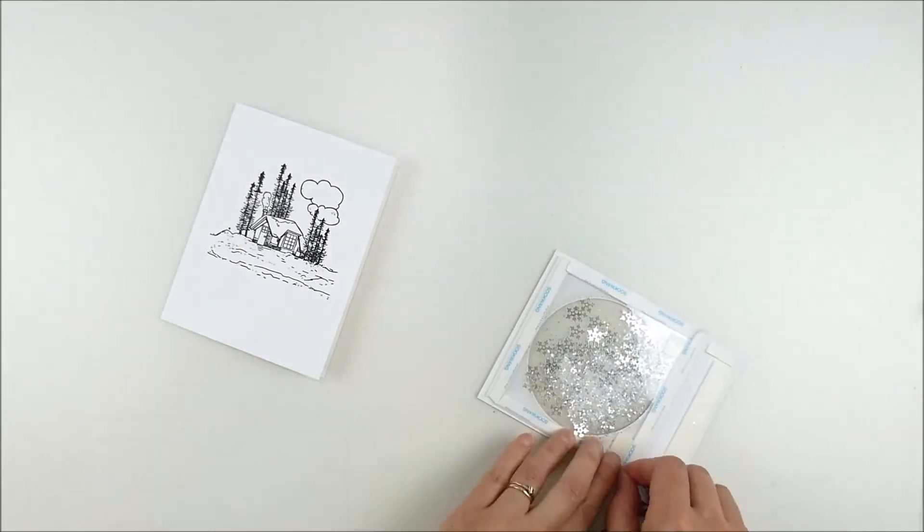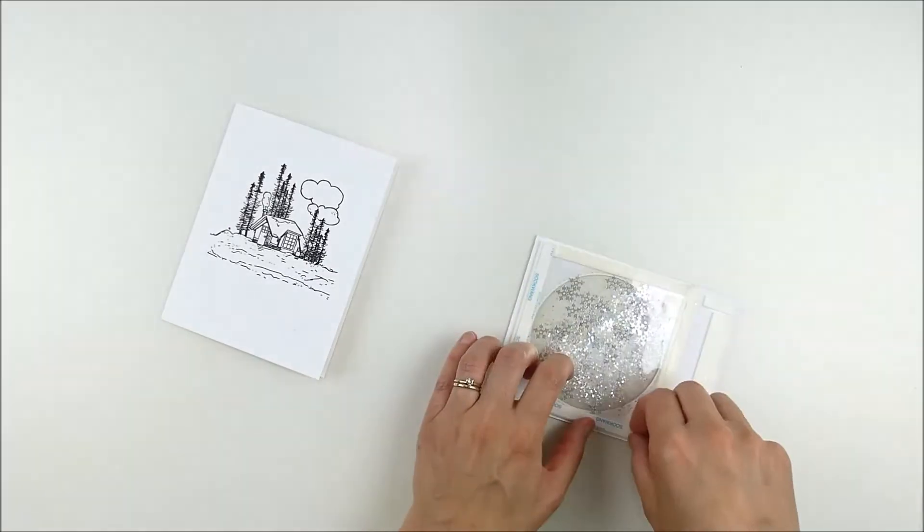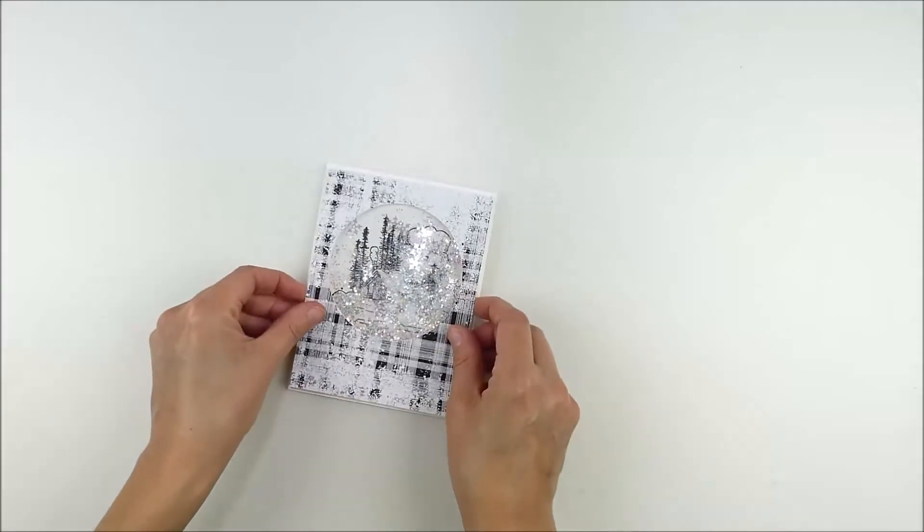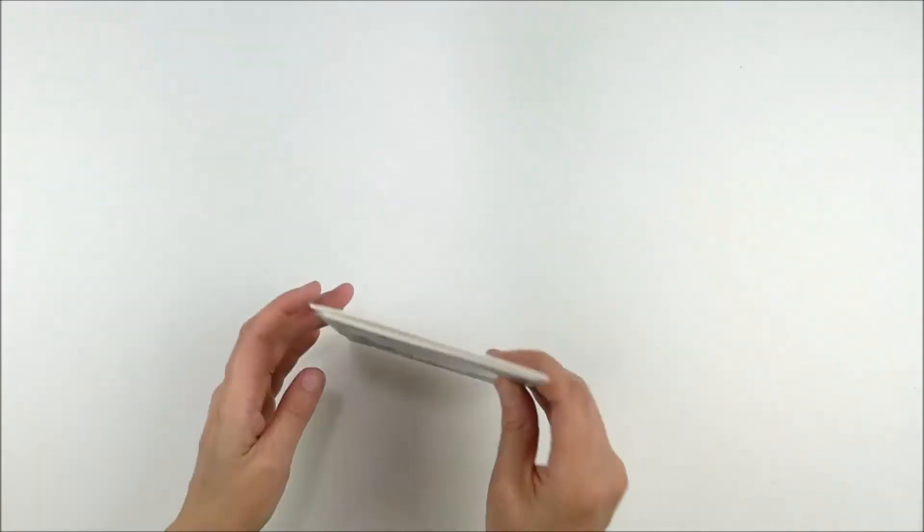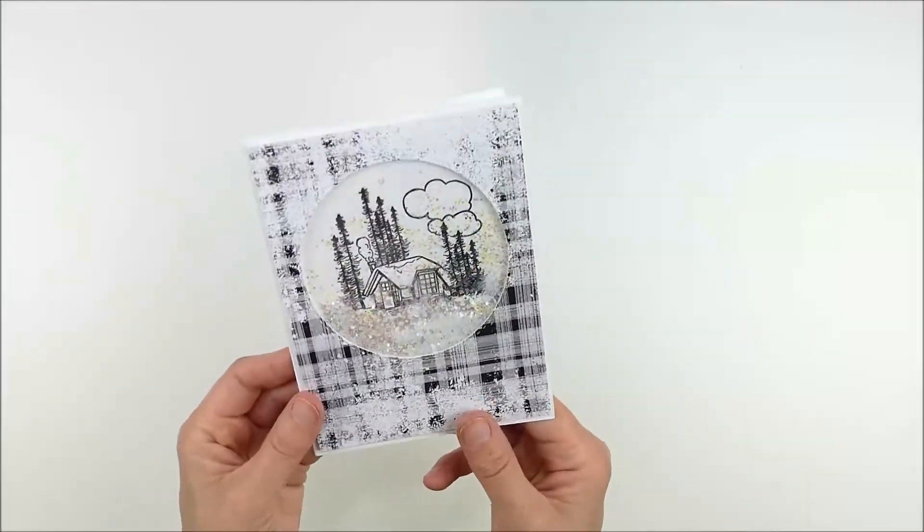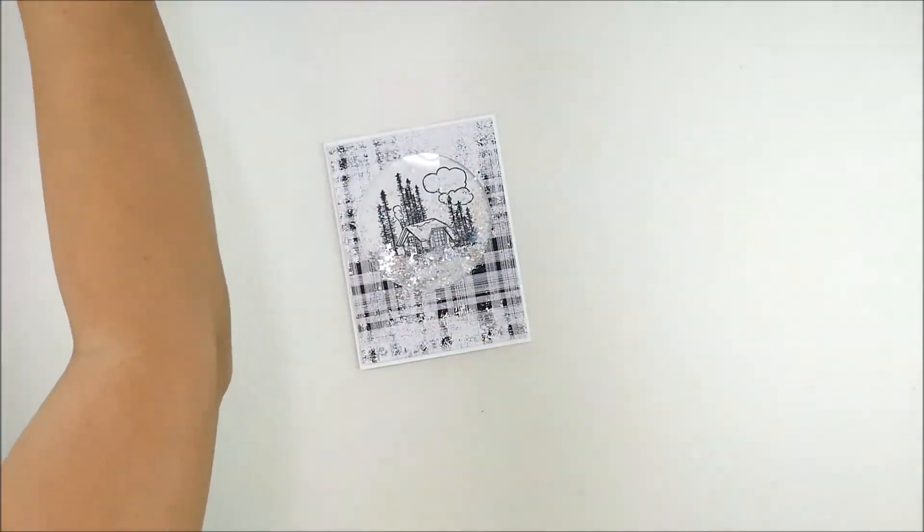So then I needed to cover the edges of that acetate again with adhesive so it would adhere to my card base. And the great thing about using two layers of acetate is it helps everything in the shaker to move really well. So you can see how all the snow globe elements just shake around really nicely, which is kind of fun.